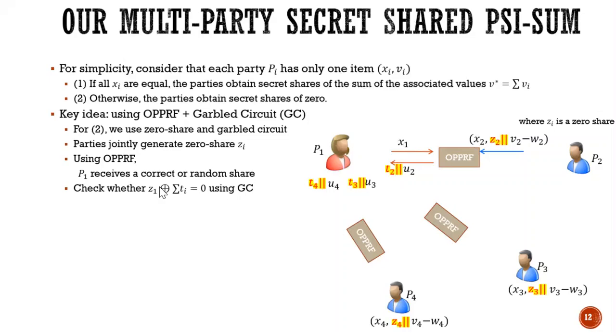And if yes, the equation is correct, then the garbled circuit gives a refresh share of V star. Otherwise, a share of zero. So this is how we do secret share PSI sum for one item.